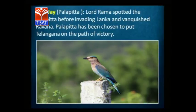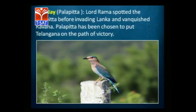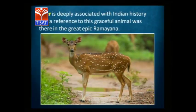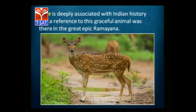The Blue Jay was spotted before invading Lanka — it has a link with the Ramayana. Rama got victory over Ravana, so this is considered auspicious and lucky, which is why it is the state bird. The deer is the state animal. Deer also has a link with the Ramayana.